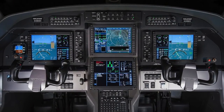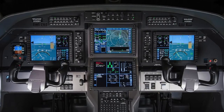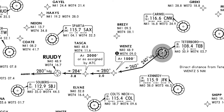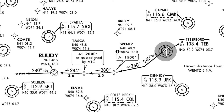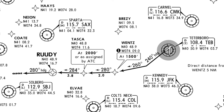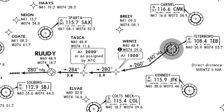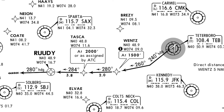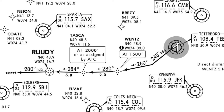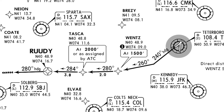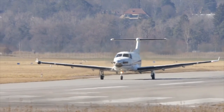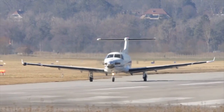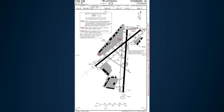VNAV can be used during a climb to meet altitude constraints in the flight plan. Altitude constraints are often found on published SIDs and can also be entered by the pilot. For a detailed description of the VNAV rules, refer to the VNAV overview video. In this video, we will demonstrate using VNAV to fly an RNAV departure on a flight from Teterboro to Gary, Indiana.